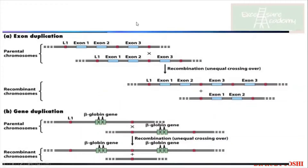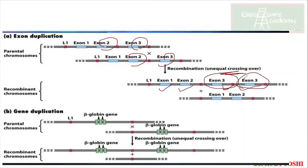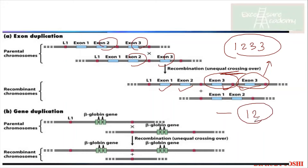In exon duplication via unequal crossing over: a parental chromosome carries exons 1, 2, 3. After unequal crossing over, one chromosome gets exons 1, 2, 3, 3 — exon 3 is duplicated — and the other gets exons 1 and 2 only. The gene with the duplicated exon will transcribe and produce a different protein. This is how exon duplication brings about diversity in proteins.